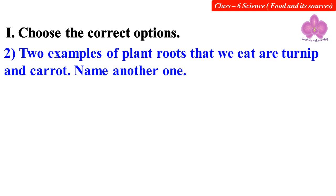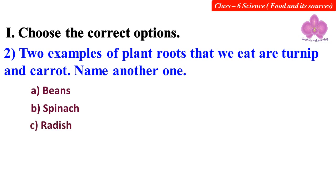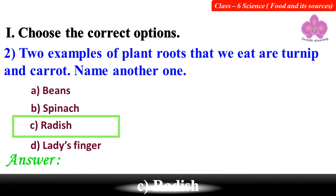Two examples of plant fruits that we eat are turnip and carrot. Name another one. Option A: Beans. Option B: Spinach. Option C: Radish. Option D: Lady's finger. Answer: C. Radish.